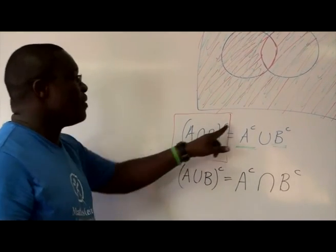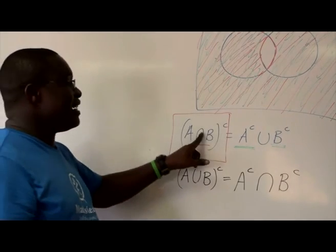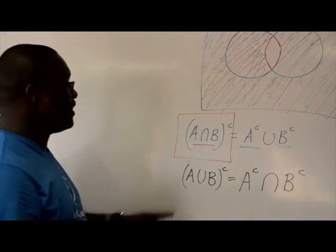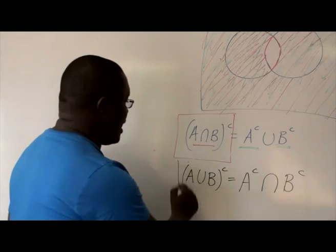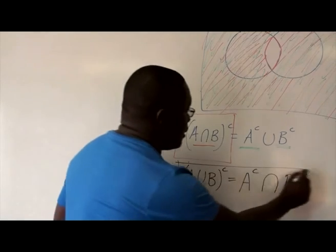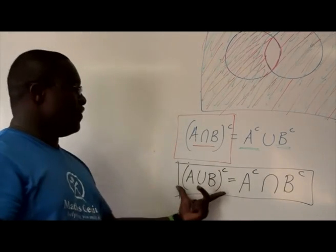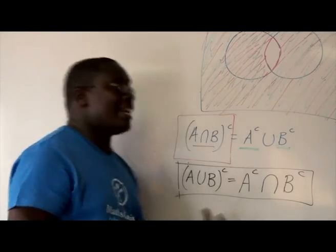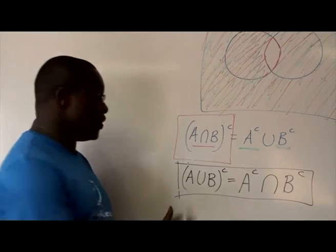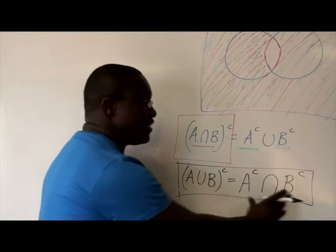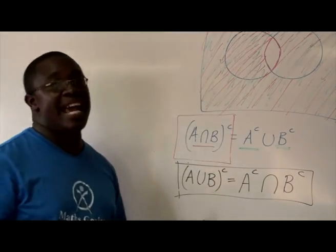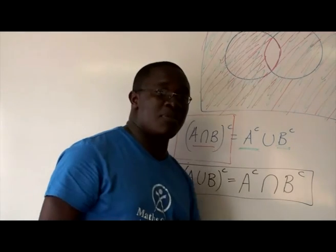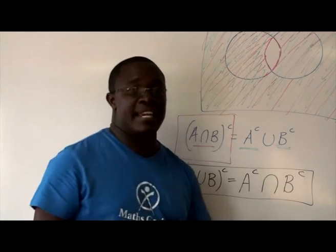Same here — when you distributed the complement, the intersection became union. Try this version and see if you shade one side, will it be the same as the other? I suggest you do it on different diagrams and see if the diagrams will be the same.